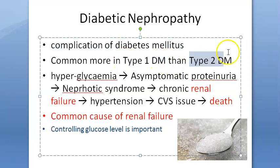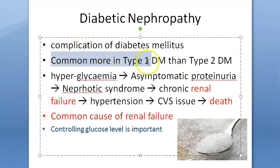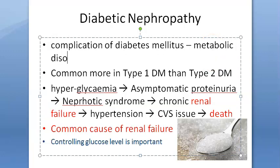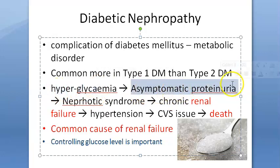Diabetic nephropathy is more common in type 1 diabetes mellitus than in type 2. There are many types of diabetes — type 1, type 2, pancreatic causes, genetic factors, and gestational diabetes mellitus. Diabetes mellitus is a metabolic disorder characterized by hyperglycemia, where the body cannot properly metabolize glucose.